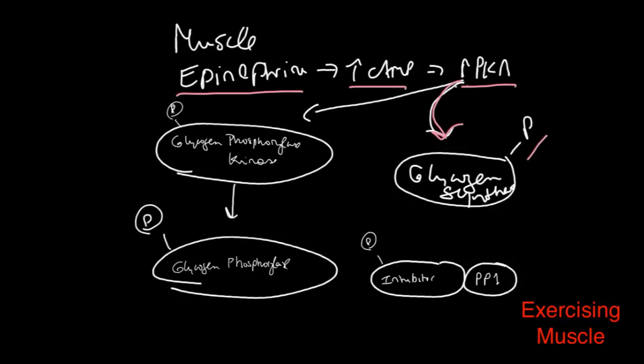Cyclic AMP will bind to the regulatory subunits and activate PKA. And the muscle will do the exact same things. It'll phosphorylate glycogen synthase, turning it off. It'll phosphorylate glycogen phosphorylase kinase, turning it on. This kinase will phosphorylate the Pac-Man enzyme, glycogen phosphorylase, and this gets turned on. Now you mobilize your glycogen.